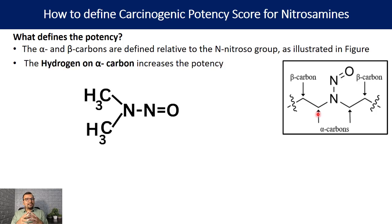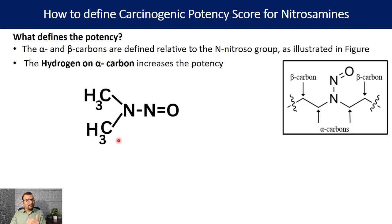It is very important to understand that if a hydrogen is present on the alpha carbon, it increases the potency of the nitrosamine compound. In the example shown, the alpha carbon — just adjacent to the nitrogen — has three hydrogen atoms, and the alpha carbon on the other side of the nitrogen also carries three hydrogen atoms. This increases potency, meaning the compound will have a lower acceptable intake concentration.